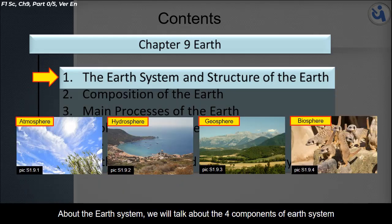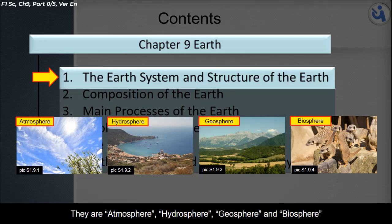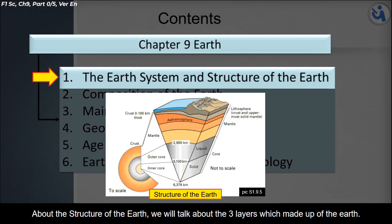About the Earth system, we will talk about the four components: atmosphere, hydrosphere, geosphere, and biosphere. About the structure of the Earth, we will talk about the three layers which make up the Earth: crust, mantle, and core.